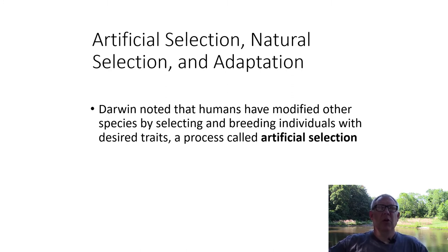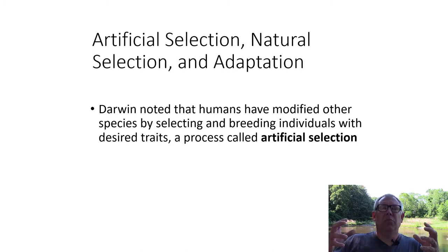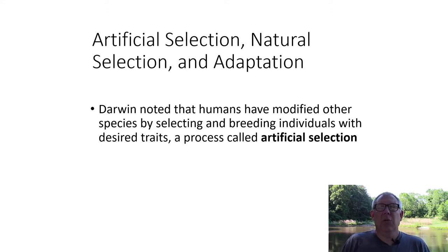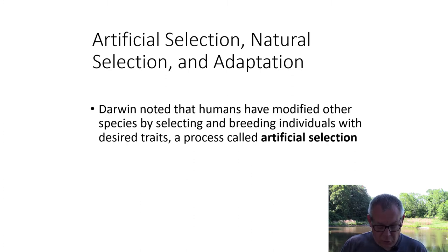Humans have been doing this for millennia. Darwin was quite into pigeon breeding — you breed different pigeons to get different characteristics. But anyone familiar with what farmers and people do knows how they artificially select for traits they want in certain organisms.